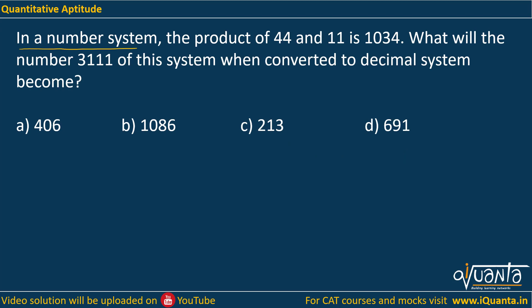The question is: in a number system, the product of 44 and 11 is 1034. What will the number 3111 of this system when converted to decimal system become?